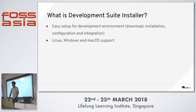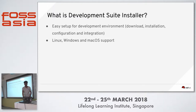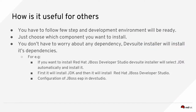Basically it's a desktop application which is supported on Linux, Windows, and Mac. There are 18 to 19 components we have provided for installation. What we are using to build the desktop application is Electron — it's a Chromium browser. The user interface is AngularJS and PatternFly, and the back-end we are using is Node.js.